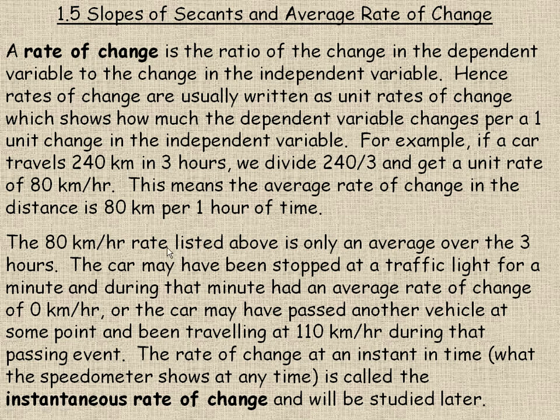The 80 km/hr rate is only an average over the 3 hours. The car might have been stopped at a traffic light for a minute, and during that minute had a rate of change of 0 km/hr. Or the car may have passed another vehicle at some point and been traveling 110 km/hr during that passing event. The 80 km/hr is just an average over the 3 hours.